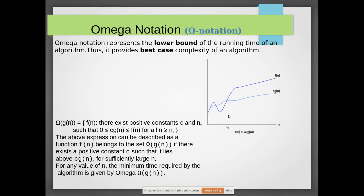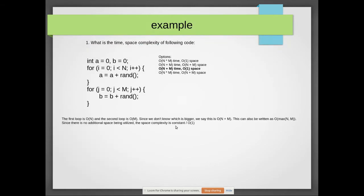Omega notation represents the lower bound. Within a short period of time the program will execute, and this is considered the best case. For example, binary search has logarithmic complexity — each time the search space is divided by two, narrowing it down. Within a few searches it will find the value, so we call this the best case — a lower bound.